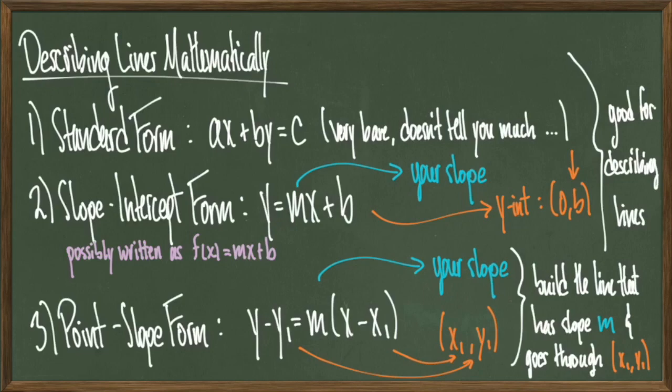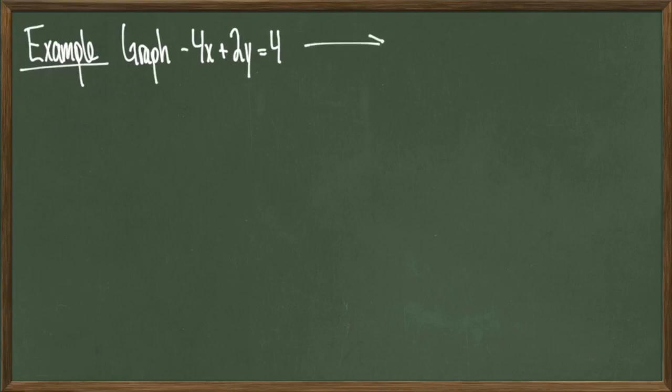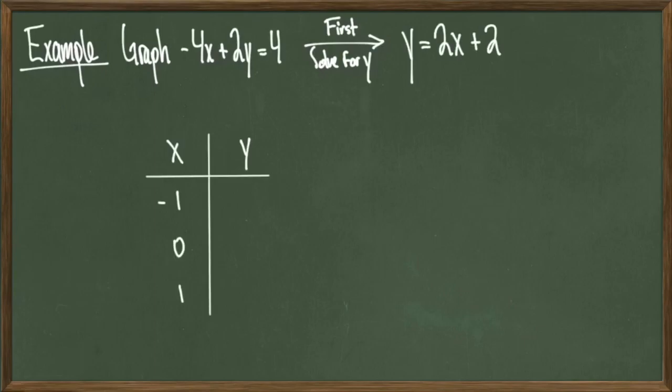Let's go ahead and jump into some problems. For our first example, we're going to graph the line in standard form, negative 4x plus 2y equals 4. Now like I said, the first thing to do here is to solve for y and to get it in point-slope form. If we do that, we get that y is equal to 2x plus 2.